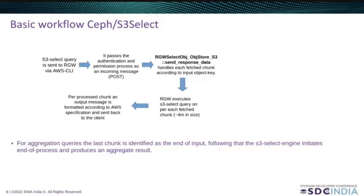Those broken lines are stored and later merged with the next broken line and finally processed. Per each processed chunk, an output message is formatted according to AWS specification and sent back to the client. For aggregation queries, the last chunk is identified as the end of input. Following that, the S3 Select engine initiates end of process and produces an aggregate result.